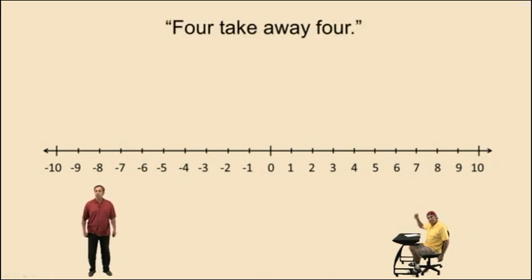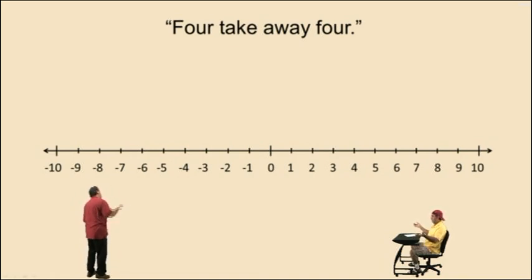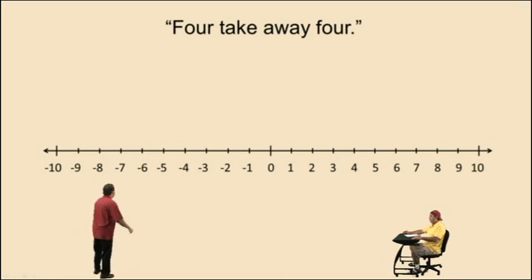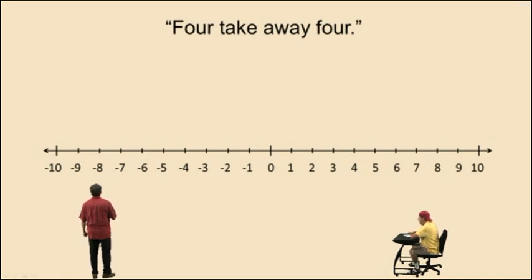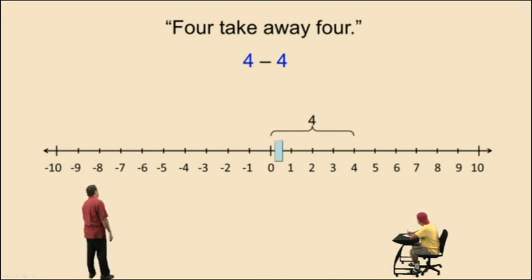Four take away four. If you have four and you take away four, you're going to end up with zero, right? Charlie, if you had four apples and somebody takes away your four apples, how many apples do you have left? Zero. That's right, you have zero. So let's begin by translating this word statement into a math statement. Four take away four means four subtract four — if you take away, you're subtracting. Four subtract four, let's do it on a number line. Four subtract four gives you zero, of course. I mean, that makes sense.